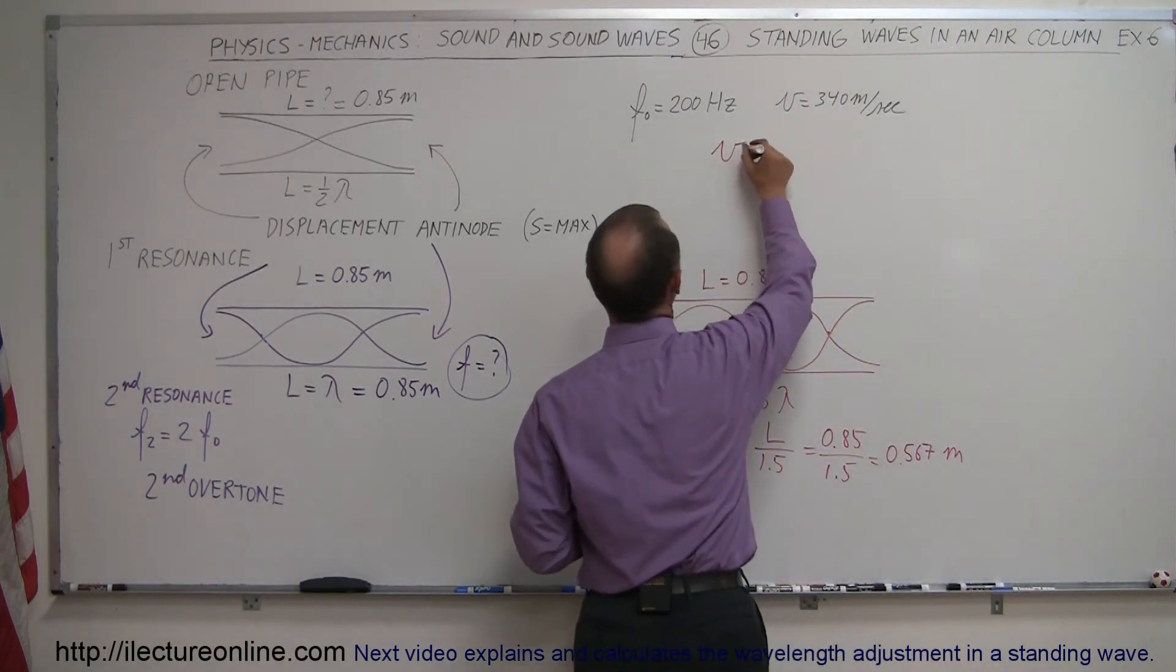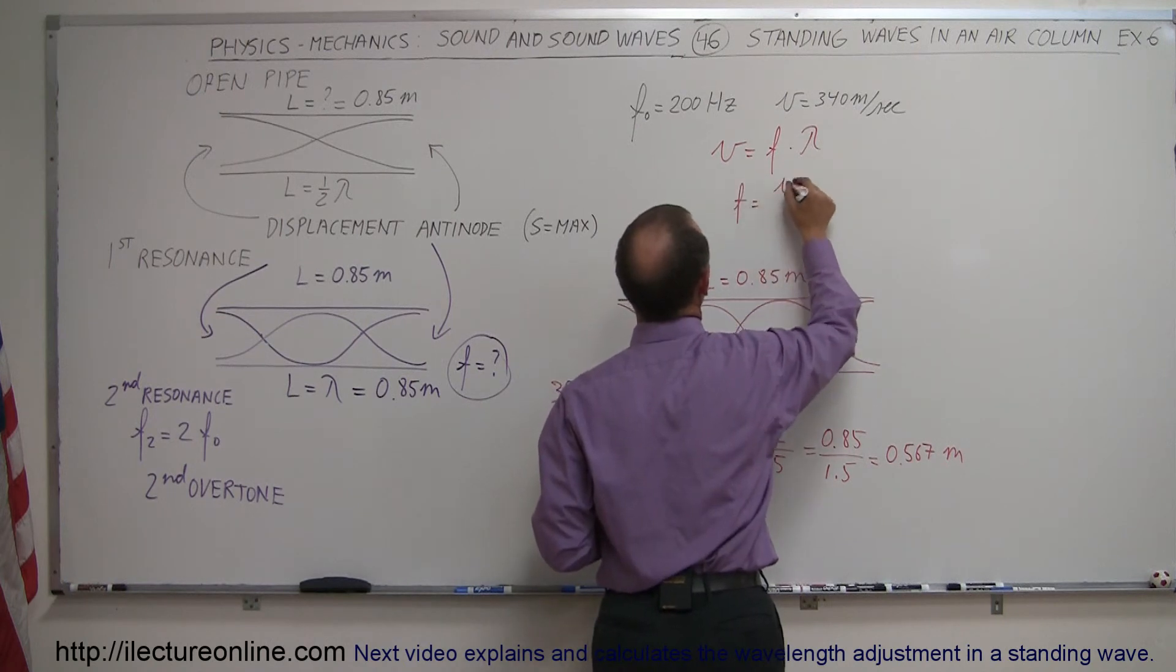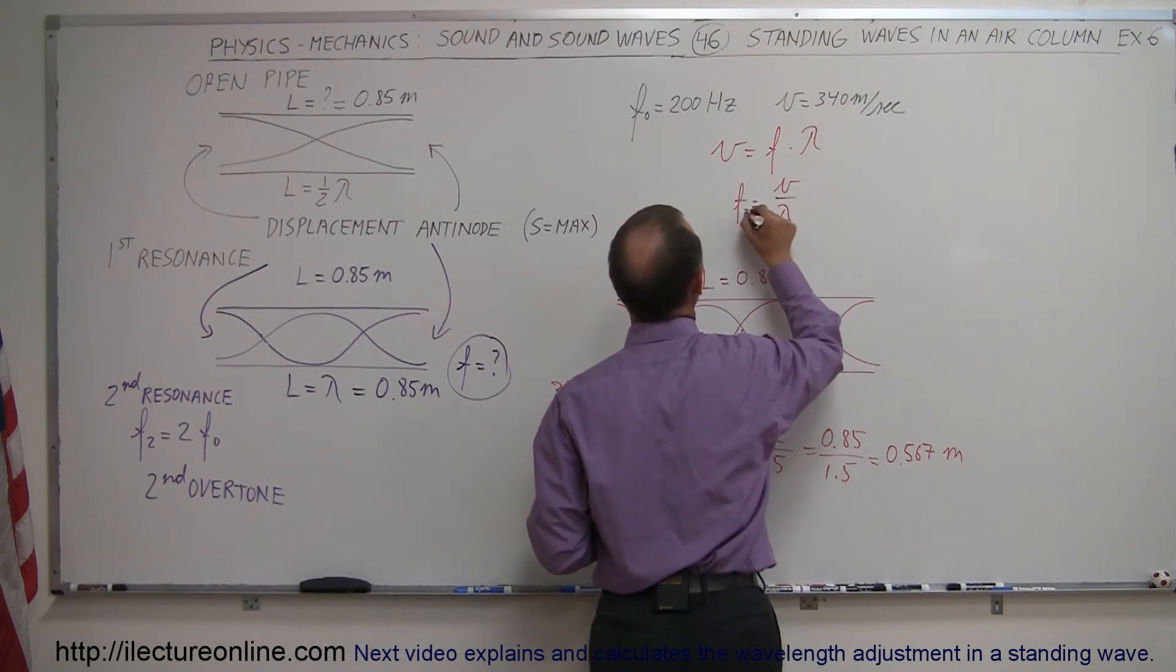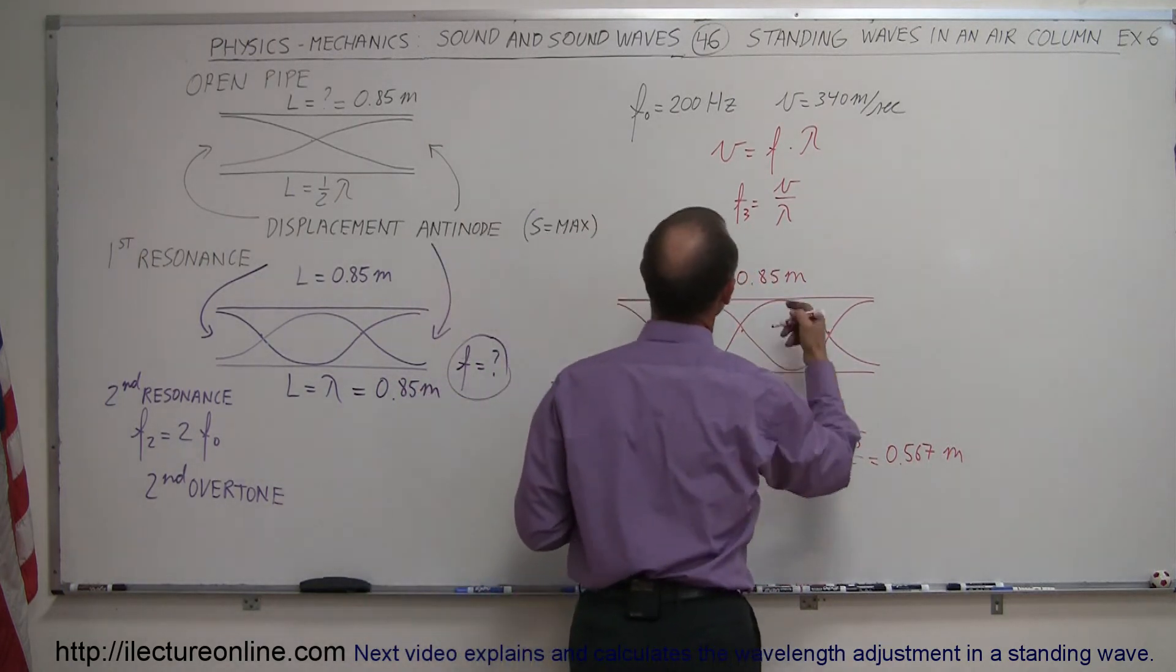And again, velocity is equal to frequency times wavelength, and frequency, therefore, is equal to velocity divided by the wavelength. And so the frequency of the third, or the third frequency, or the third resonance frequency...